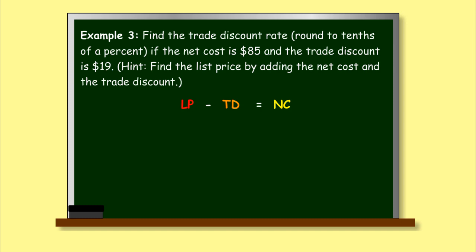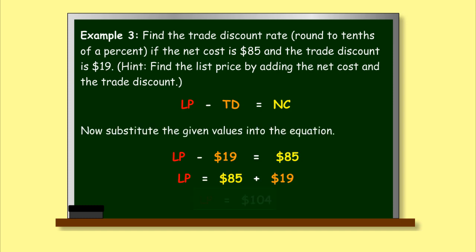LP minus TD equals NC. Now substitute the given values into the equation. LP equals $104.